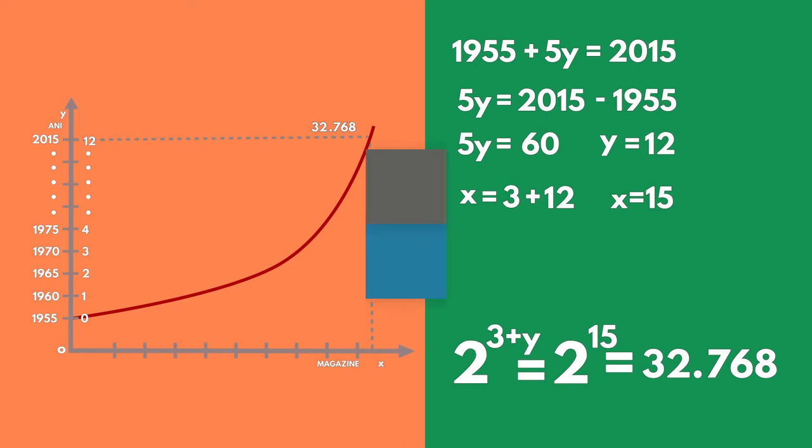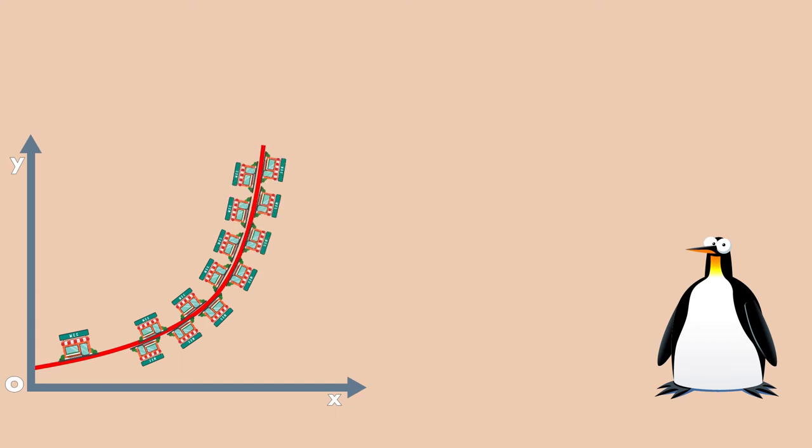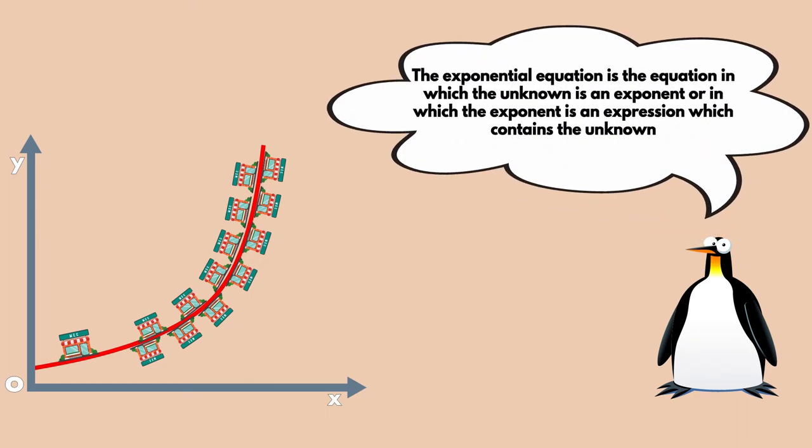Now that we've learned how the franchise system can help us achieve exponential growth in our business, maybe we should find out what the exponential equation is. Exponential equation is actually the equation in which the unknown is an exponent or in which the exponent is an expression that contains an unknown.